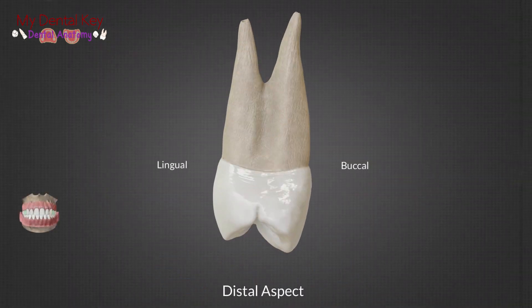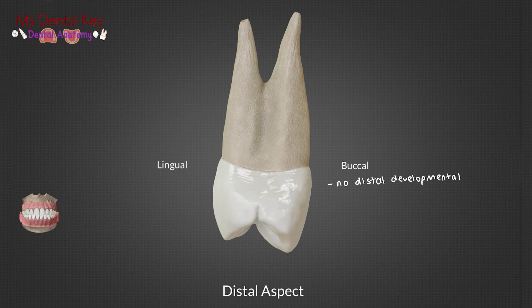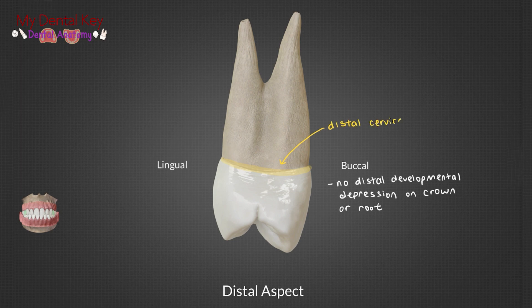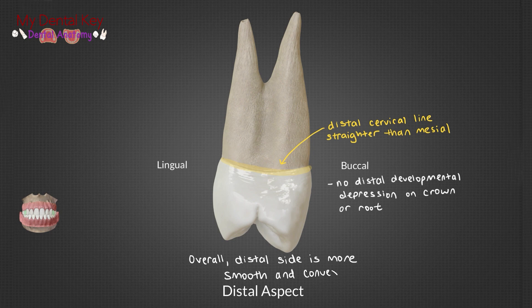Onto the distal side, when compared to the mesial side, the distal has less anatomical features. The distal aspect usually does not have a distal developmental depression, and the distal root trunk does not have a developmental groove that is found on the mesial aspect. The cervical line is straighter on the distal aspect than the mesial aspect. Compared to the mesial side, the distal side is smooth and convex.